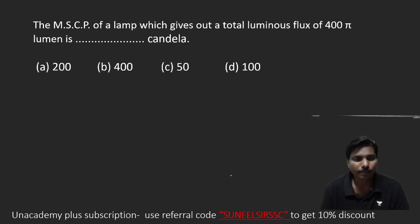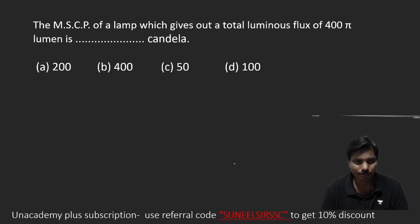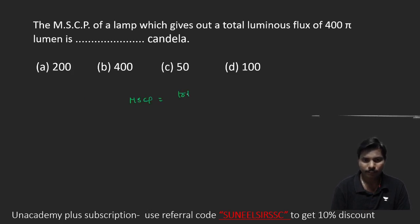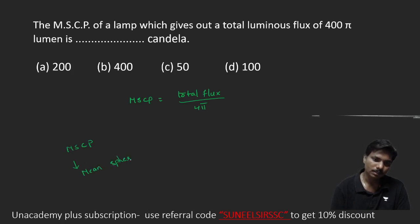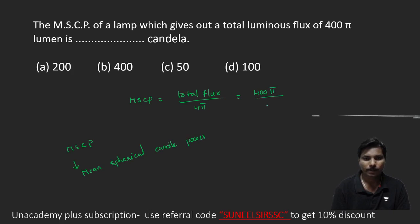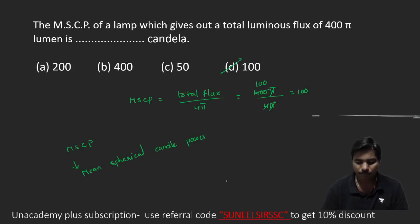Coming to the next one: the MSCP of a lamp which gives out a total luminous flux of 400π lumens is how many candela? The formula for MSCP (Mean Spherical Candle Power) is total flux divided by 4π. So MSCP = 400π / 4π = 100 candela. The answer is option D: 100.